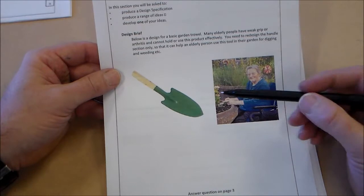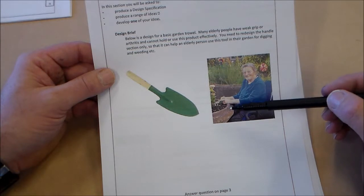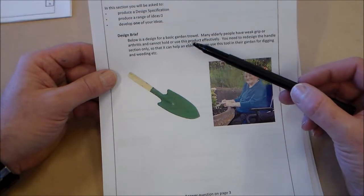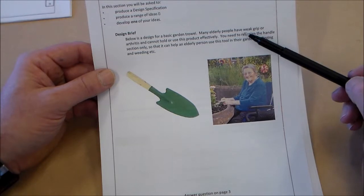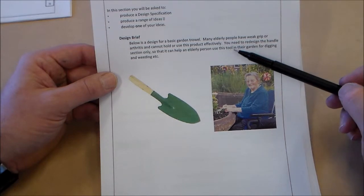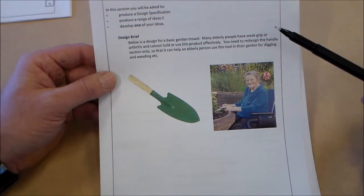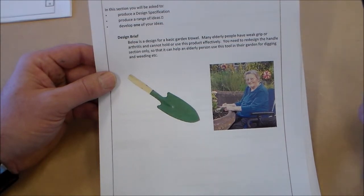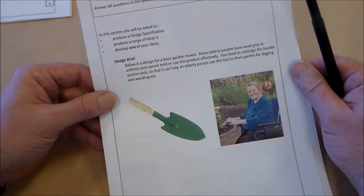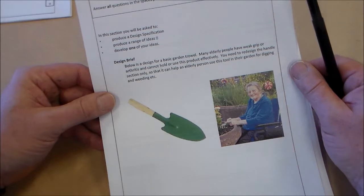So we're going to have a look at the first question. The first question showed a picture of a garden trowel and a lady doing some gardening. It gives you a design brief. It says below is a design for a basic garden trowel. Many elderly people have weak grip or arthritis and cannot use this product effectively. You need to redesign the handle section only, so that it can help an elderly person use this tool in their garden for digging and weeding. So this really is about what we call inclusive design. It's designing products that a wide range of people can use. And sometimes these products are actually better products for everyone to use.